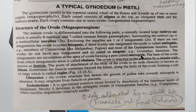If we consider the two integuments covering the nucellus tissue on all sides, at the point where the integuments are not complete — where they do not fully cover — a pore or opening is created. This opening is known as the micropyle. So the micropyle is actually an opening which is formed due to the incomplete integuments.